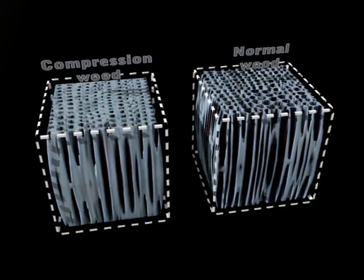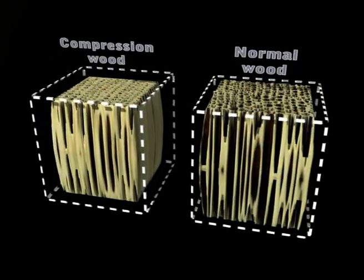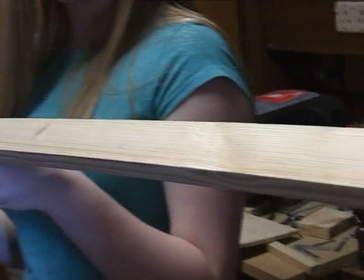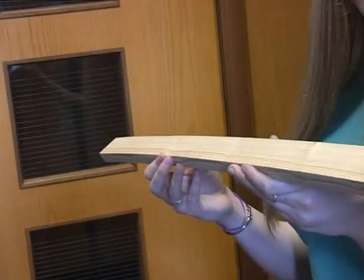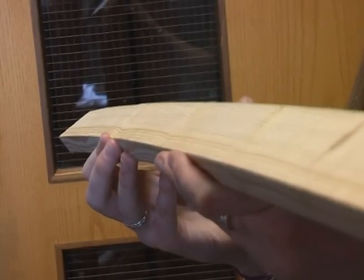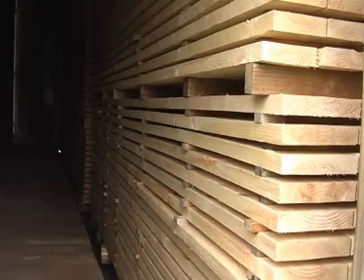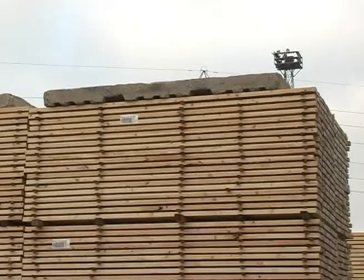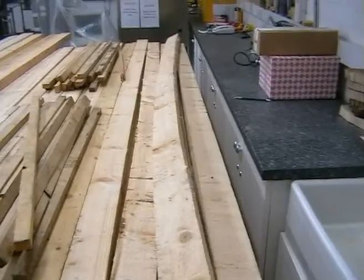Different parts of the wood shrink by different amounts. When one side of the timber shrinks more than the other, the piece bends. Understanding and limiting this distortion is important for sawmillers because bent pieces of wood are not so useful.